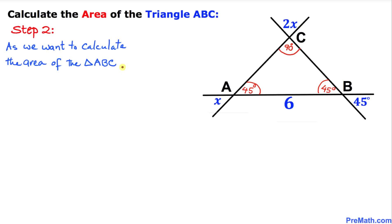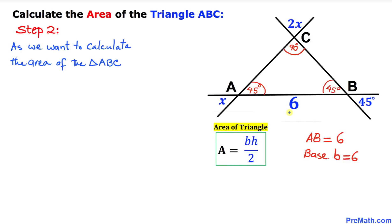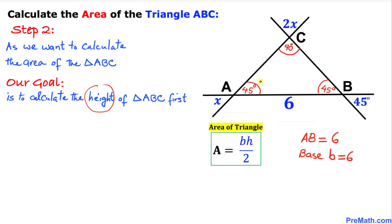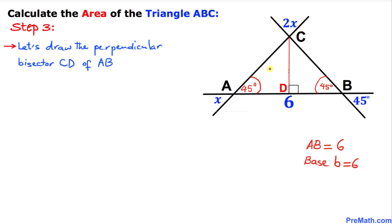Since we want to calculate the area of triangle ABC, here is the area of a triangle formula: A equals base times height divided by 2. We know that the base B equals 6. So our goal is to calculate the height of triangle ABC first. Let's draw a perpendicular bisector CD, where D is a point on AB and CD is perpendicular to AB.